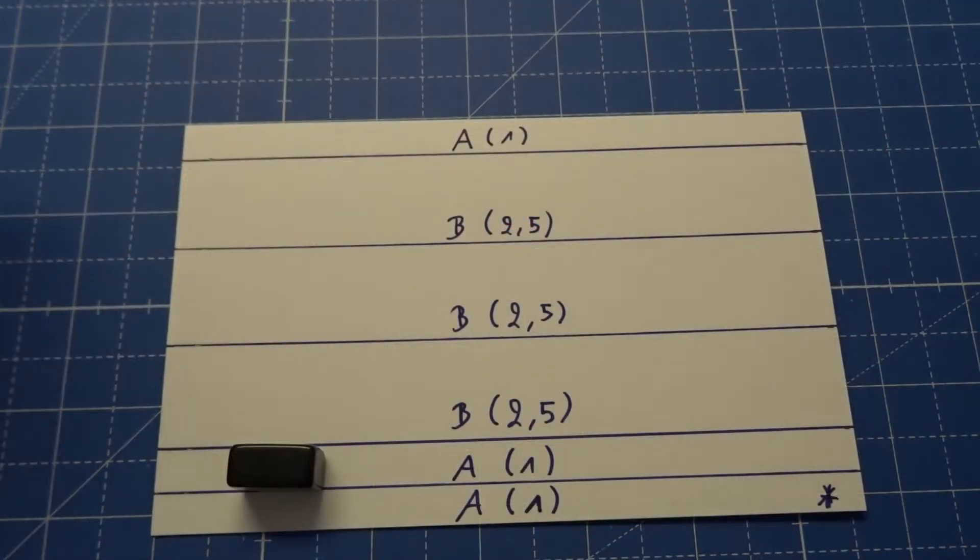So we start with a piece of cardboard. As you can see here there are different areas. The areas A have the height of about 1 cm. The areas B have the height of about 2.5 cm.